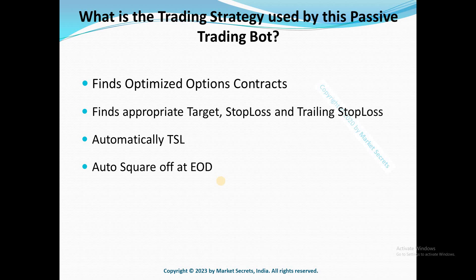What happens during the end of the day? If the stop loss or the target is not hit for any of the legs till the exit window — which is a predefined time, for example 1 p.m., 2 p.m., 2:30 p.m., 2:45 p.m., or 3 p.m. — the bot will automatically square off those trading legs. It will auto square off all open positions at a predefined time. This provides end-to-end automation with no manual intervention needed at any point.